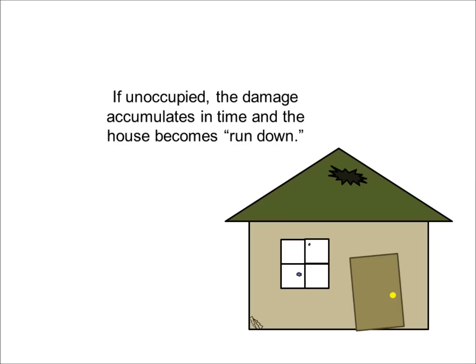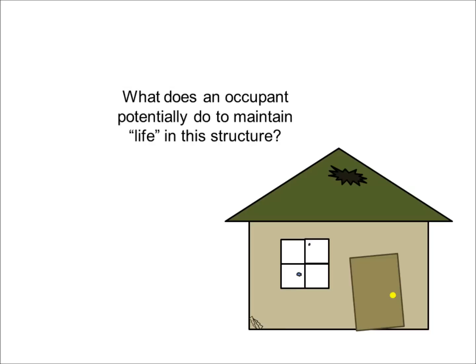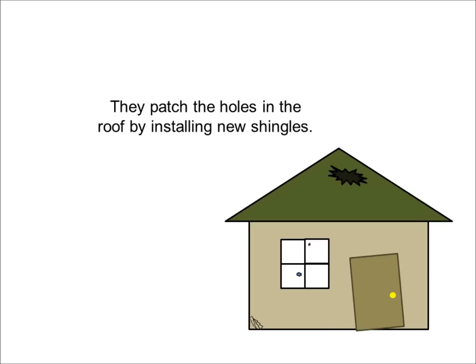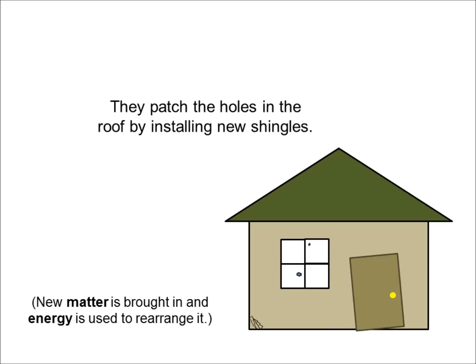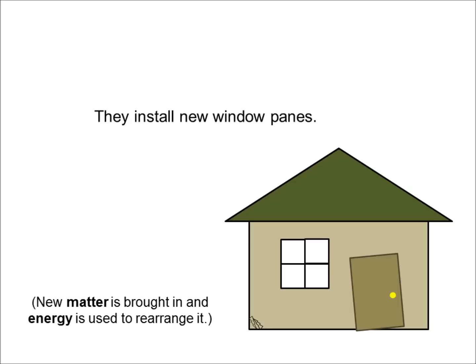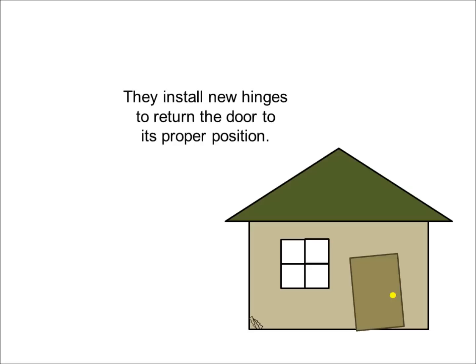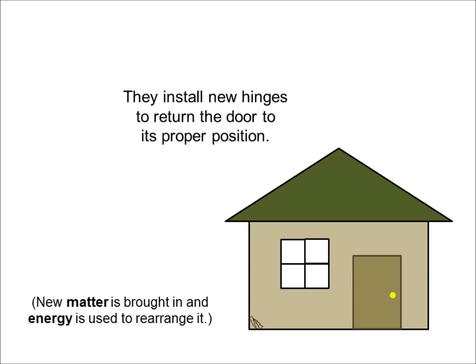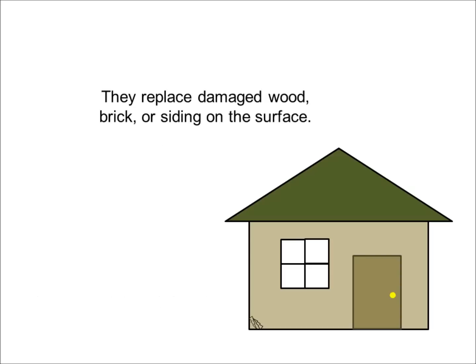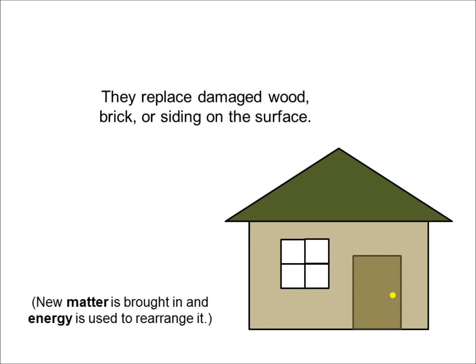If the house isn't occupied by a human, that damage is going to simply accumulate, and the house will become what we often describe as run-down and unlivable. Now, when a person's living in a house, it's not that it doesn't undergo wear and tear — it's that we respond to that wear and tear. The occupant repairs it: they patch holes in the roof by bringing in new shingles, bringing in new matter and using energy to move that matter into the correct position. They install new window panes if necessary, bringing in new matter and using energy to move it into position. They install new hinges and return the door to its proper position by bringing in new matter and using energy to move it into position. And they replace damaged wood, brick, or other surfaces on the house, like siding, thereby bringing in new matter and using energy to position it as a way of maintaining the house in its functional state.